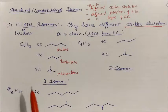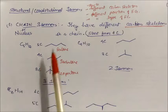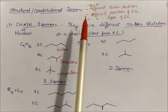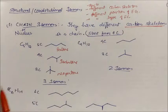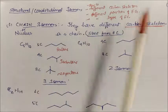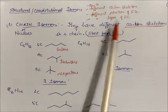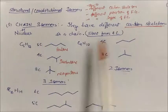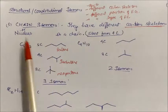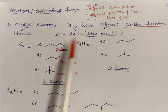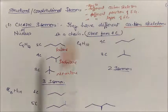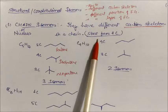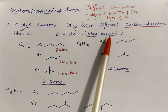Now coming to structural or constitutional isomers. These arise due to different carbon skeletons, different positions of functional groups, or different types of functional groups. Chain isomers have different carbon skeletons — this is also called nuclear isomerism. They have different types of carbon skeleton in a chain, and chain isomerism always starts from four carbons; with two or three carbons we cannot make chain isomers.